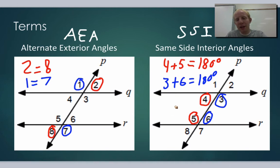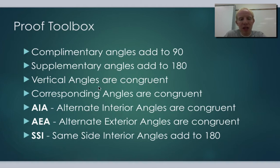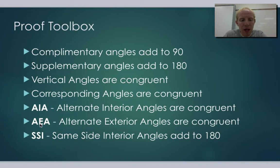Let's quickly review our proof toolbox. Complementary angles always add up to 90. Supplementary angles add up to 180. Vertical angles are congruent. Corresponding angles are congruent. The alternate interior angle theorem — AIA — says they are congruent. The alternate exterior angle theorem says alternate exterior angles are equal in measure. And the same side interior angle theorem says they add up to 180.